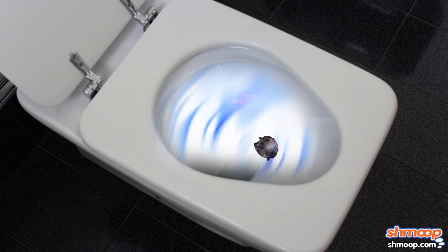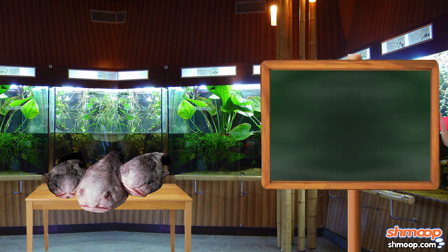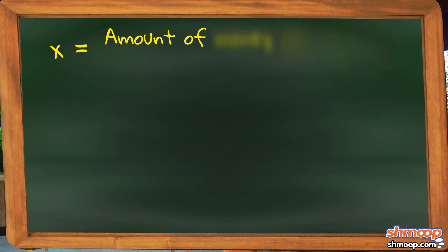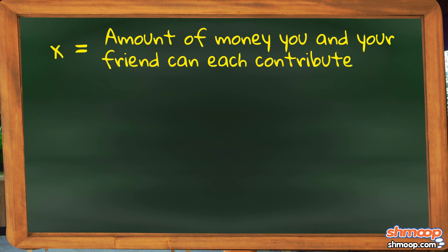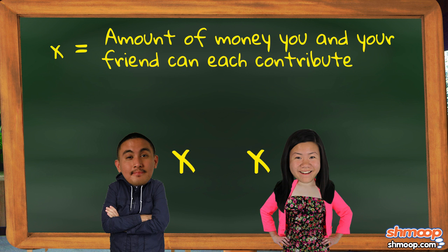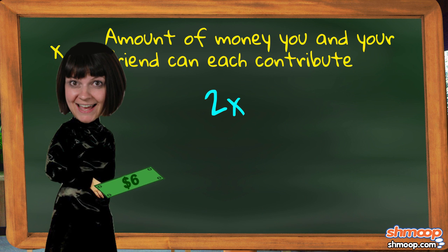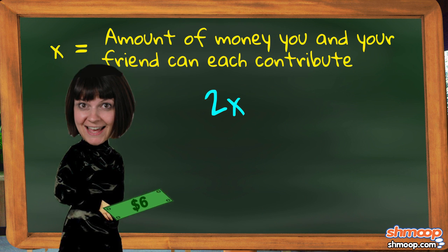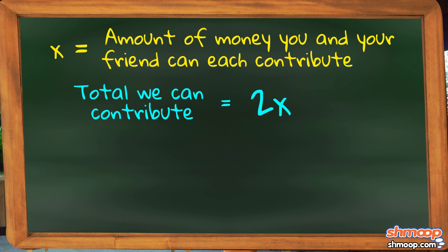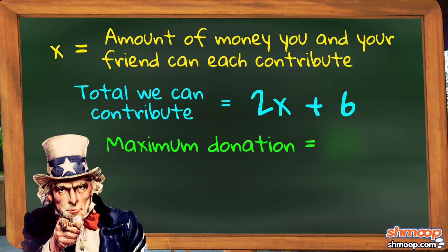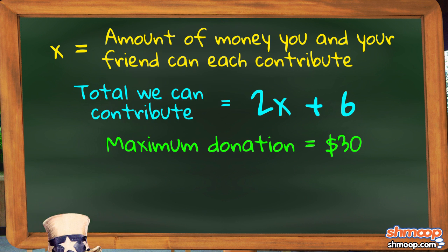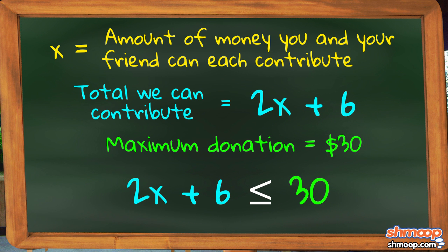We may not be able to save the blobfish, but we can solve this problem. Let's let X be the maximum amount of money you and your friend can each contribute. Since both of you are contributing X dollars, we can write that as 2X. And don't forget your mom's generous $6 donation to the cause. So the total we can contribute is 2X plus 6. But the maximum we can donate is $30, so 2X plus 6 has got to be less than or equal to $30.